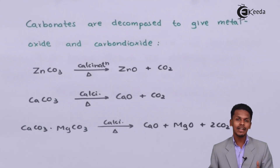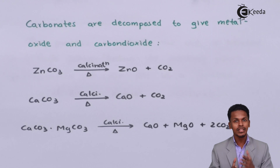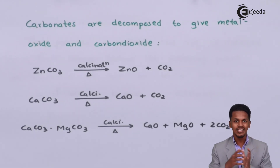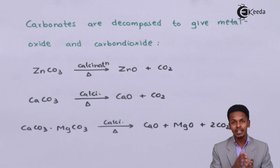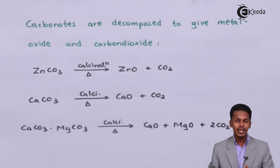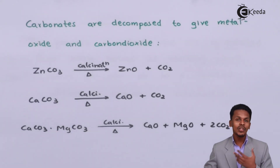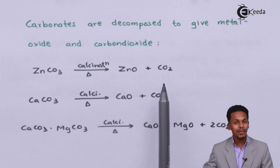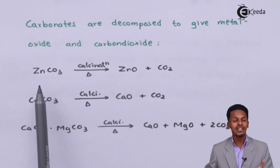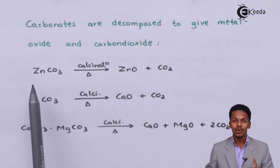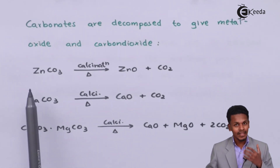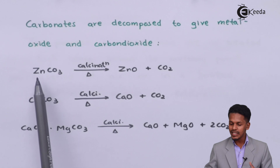In roasting, sulfide ores are reacted with oxygen at high temperature, and the sulfur atom is eliminated as SO₂, converting sulfide ores into their respective oxide ores. But in calcination, we consider carbonate ores. The carbonate ores are decomposed to give metal oxides and carbon dioxide as a byproduct.